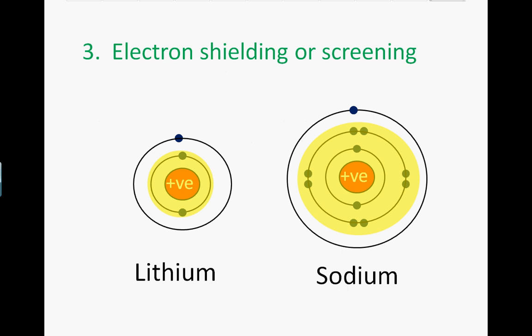Greater shielding results in a lower first ionization energy since the attraction between the nucleus and the outer electrons is weakened.